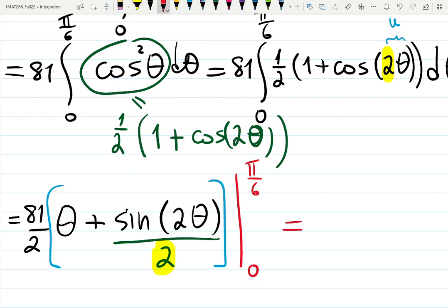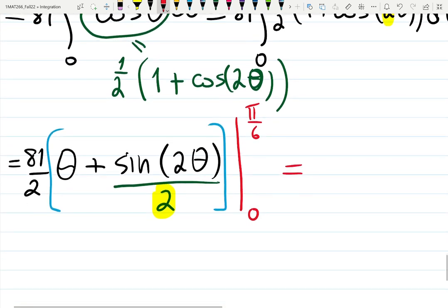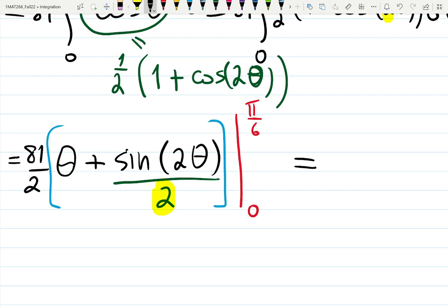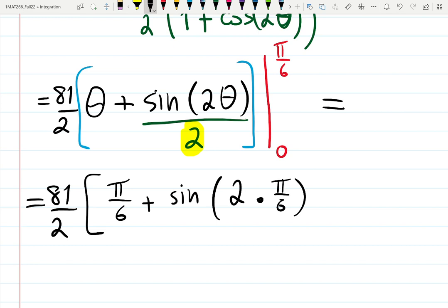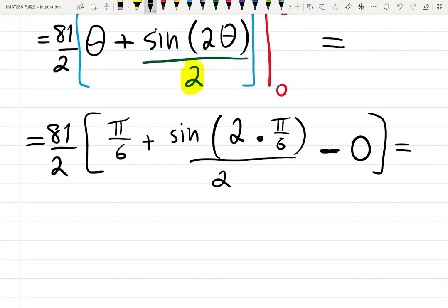We're going to plug π/6 and 0 and it gives us a number. So let's do it: 81/2 times (π/6 + sin(π/3)/2) minus (0 and 0 because sin(0) is 0).